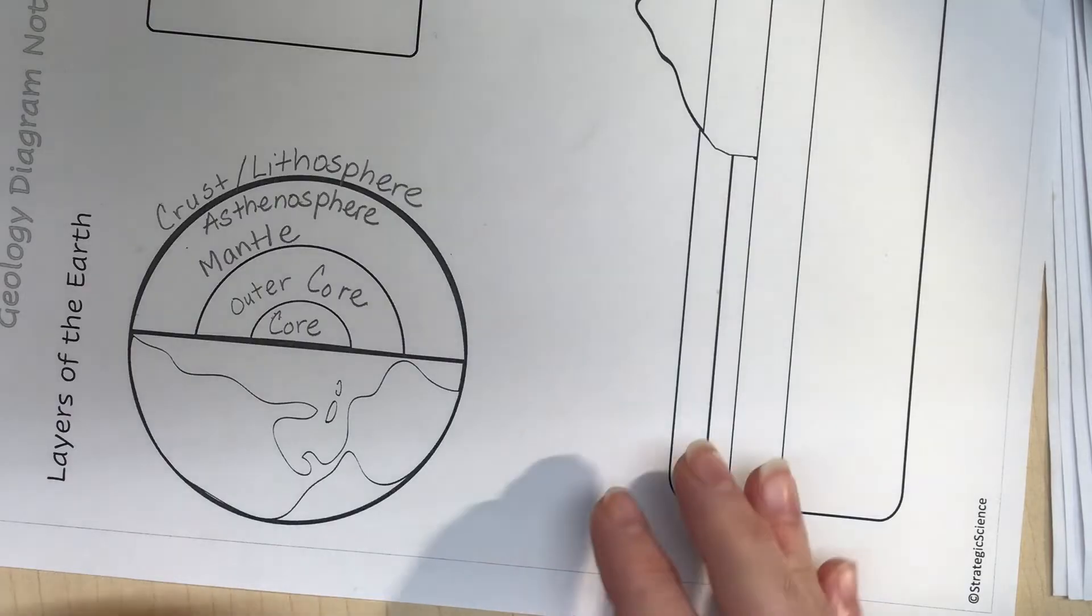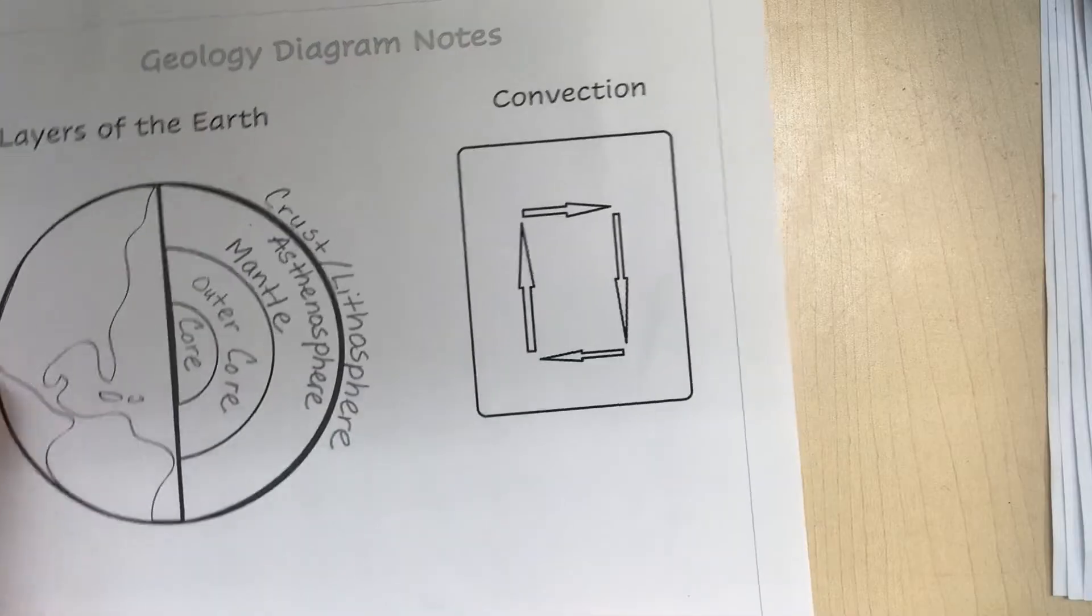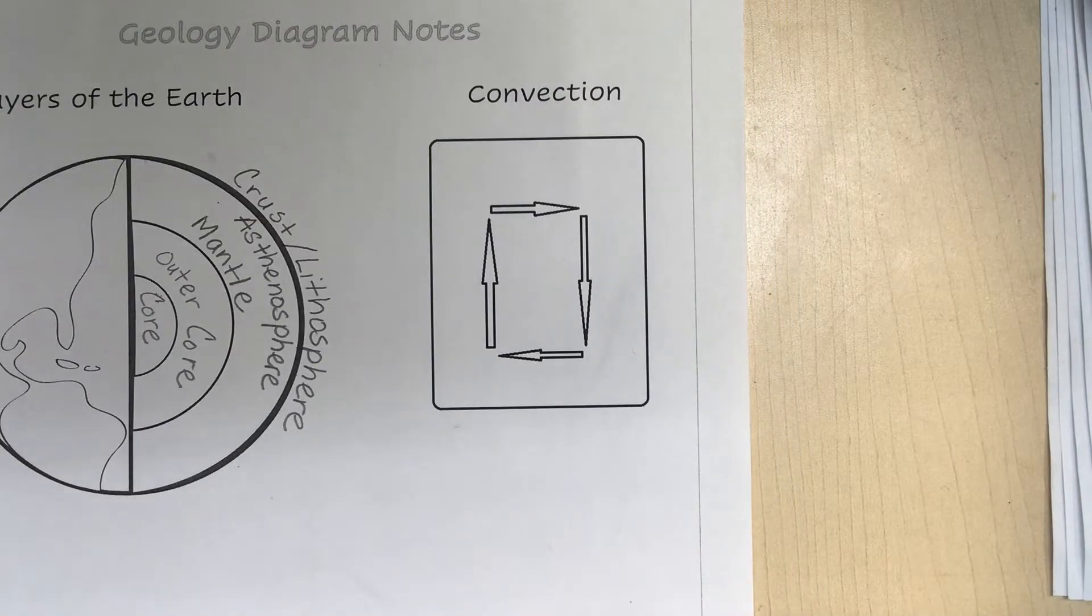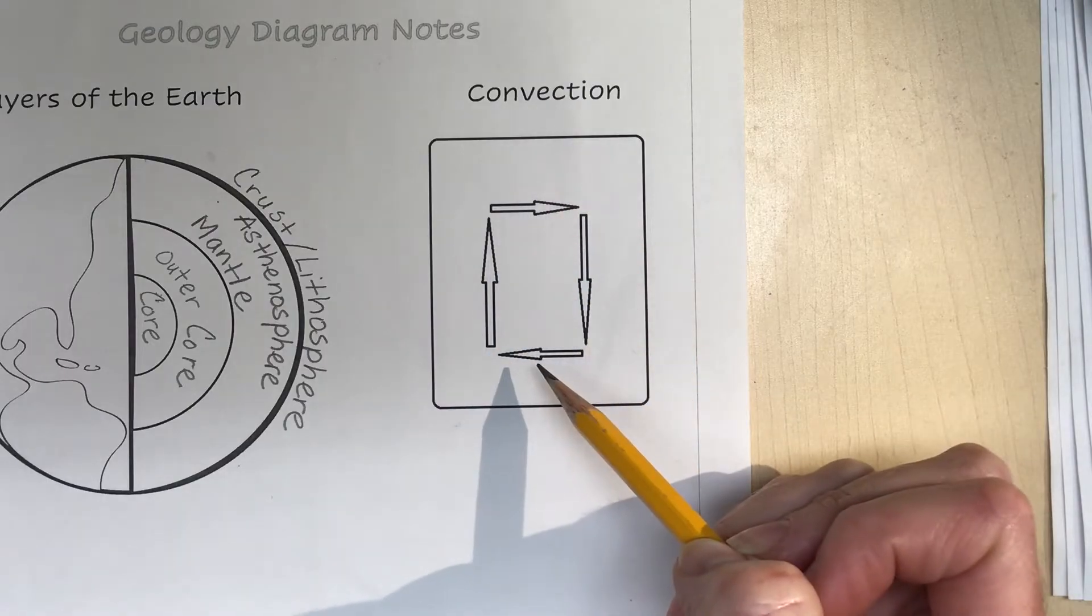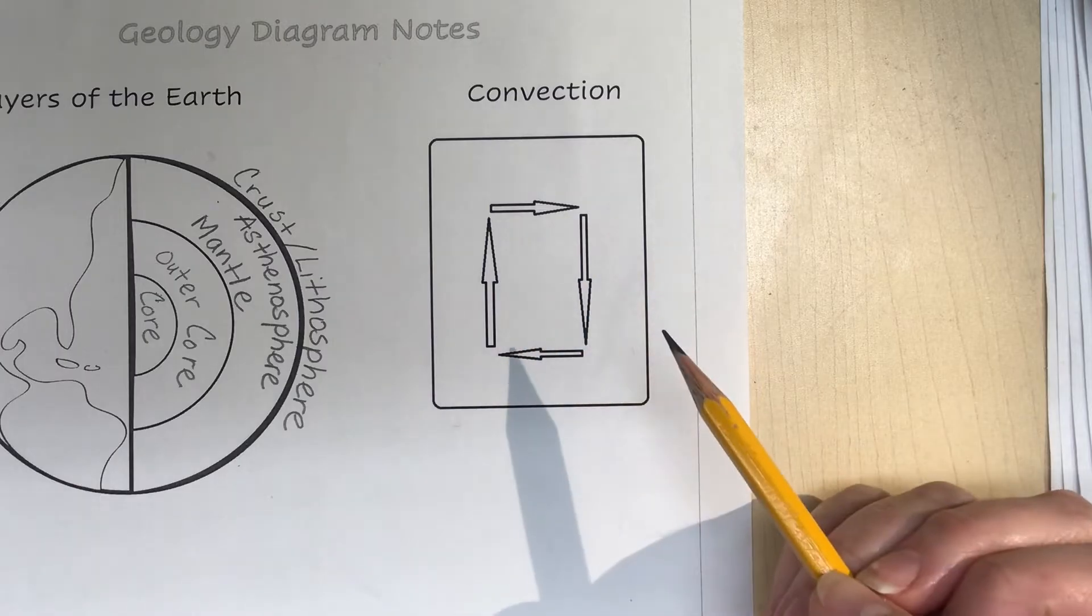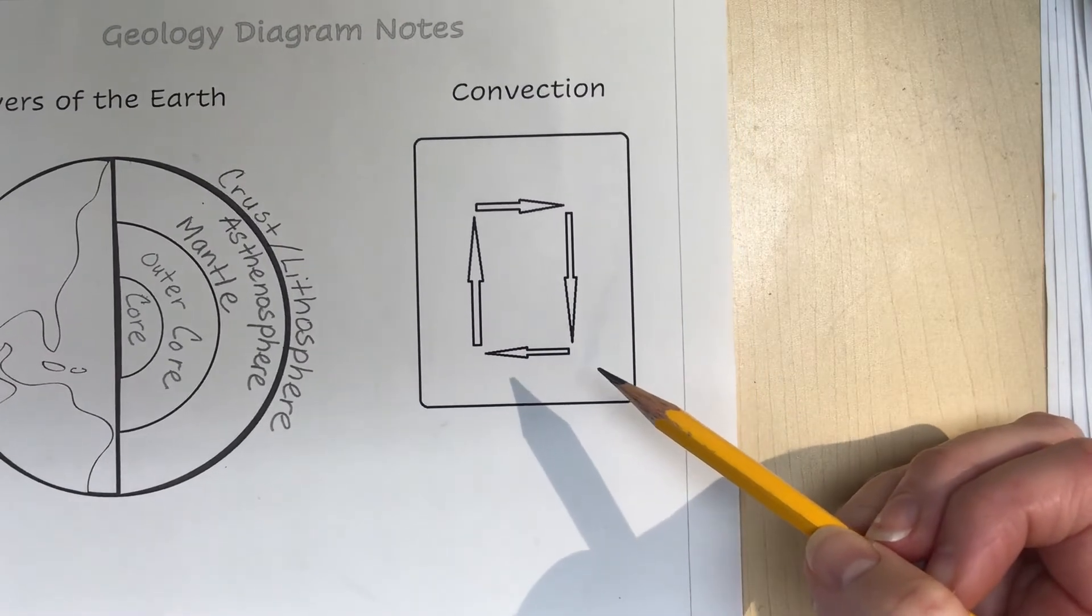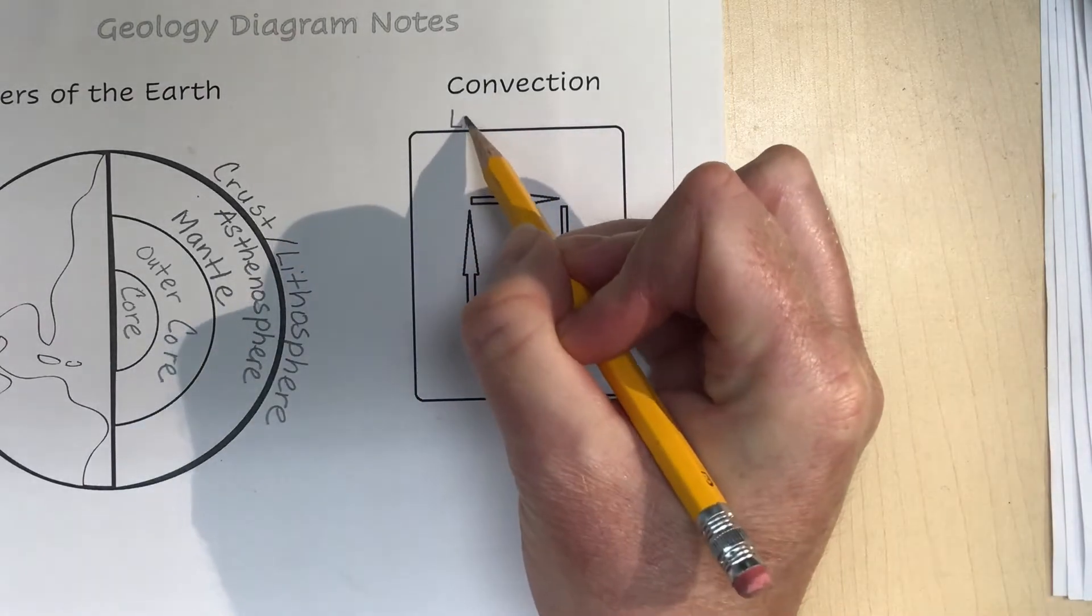Let's talk about convection. Convection is something that can occur in substances. It occurs in air, and when we study atmosphere we'll learn about convection currents in air. It occurs in water, which makes the difference when we talk about ocean currents. It also occurs in magma. At the top here we have the lithosphere.